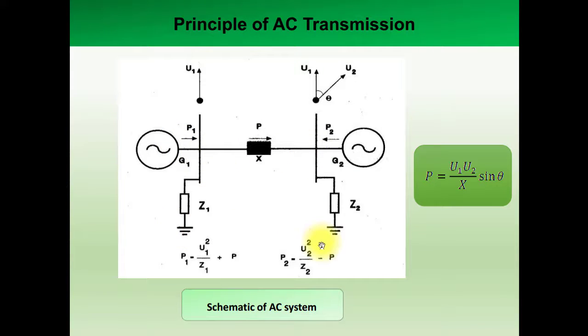Here you can see the voltage at bus 1 is U1 and voltage at bus 2 is U2. So there is a difference of angle between two buses and power is transmitted by creating the angle of difference between two phases in the AC transmission systems.